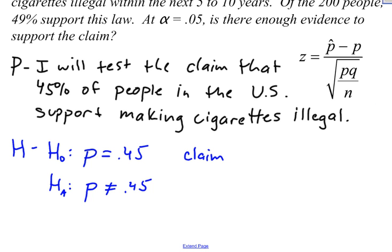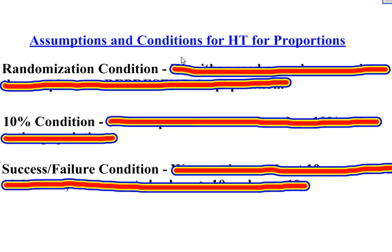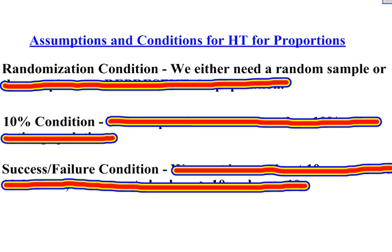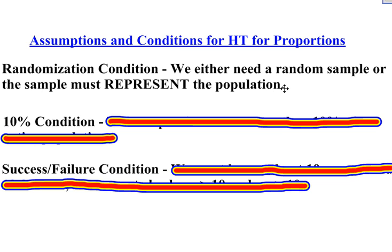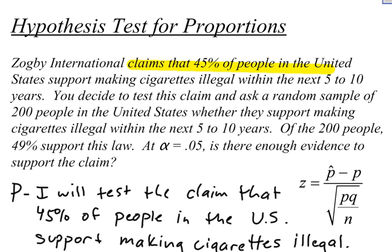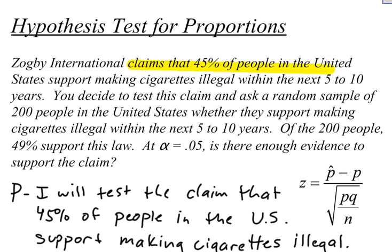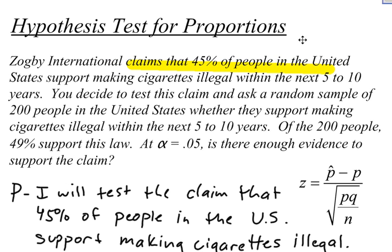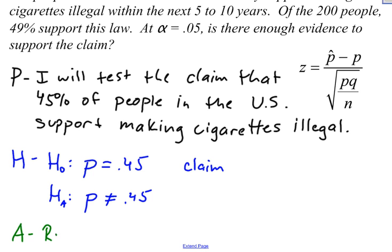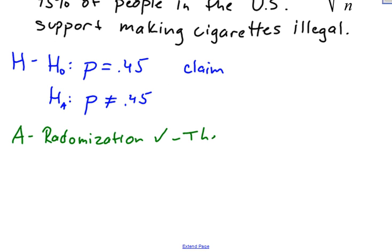The next thing we need to do is A — check our assumptions and conditions. There are three conditions for a hypothesis test for proportions. The first is the randomization condition: we want to make sure our sample was collected at random so that it represents the population. The problem states that we collected a random sample, so the randomization condition is satisfied.